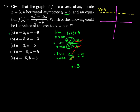From there, we can get rid of choices c, d, and e. Now let's look into our vertical asymptote of x equals 3 to figure out what the value of b has to be.